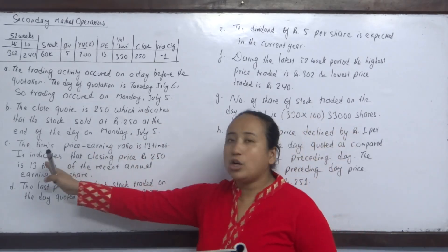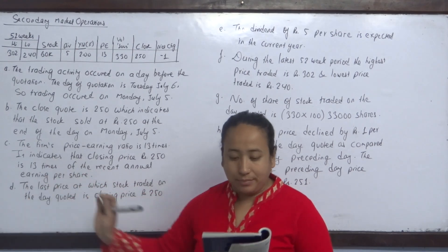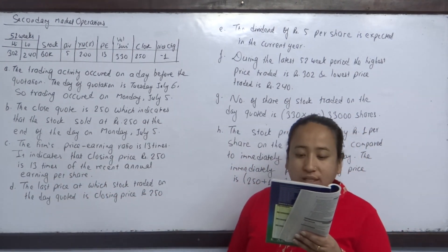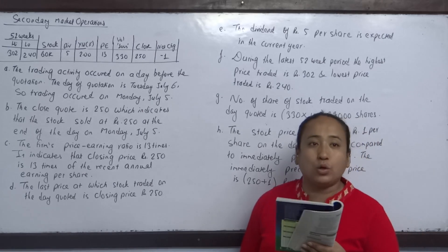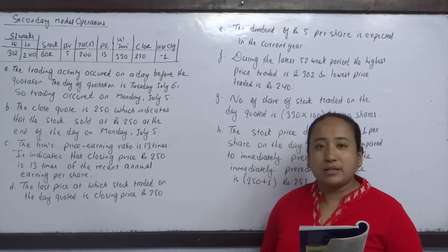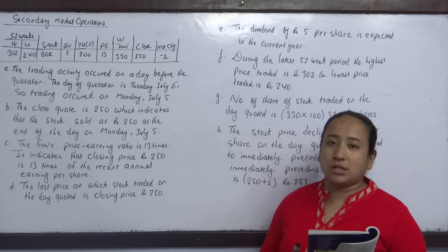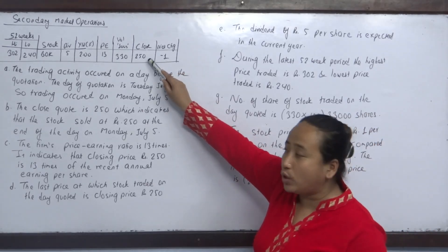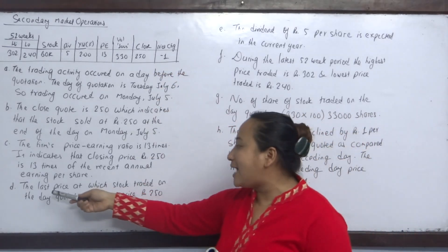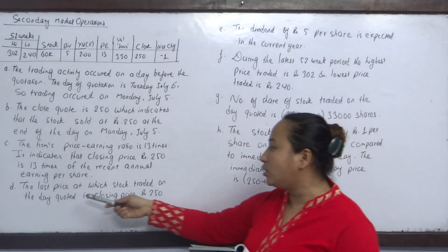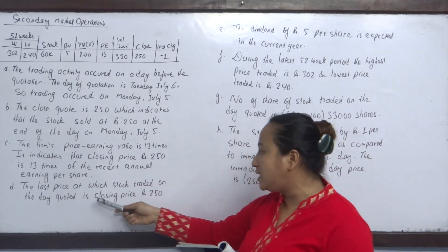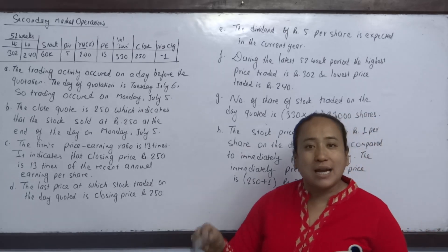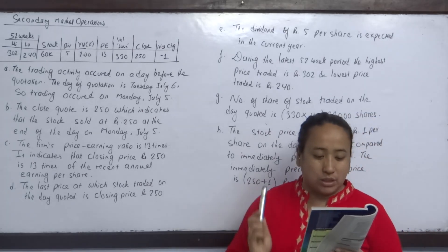The market-earnings ratio is 30 times. What is the last price at which the stock traded on the day quoted? The last price is the close price. Close price is 250. The last price at which the stock traded on the day quoted is the closing price — closing price is 250.